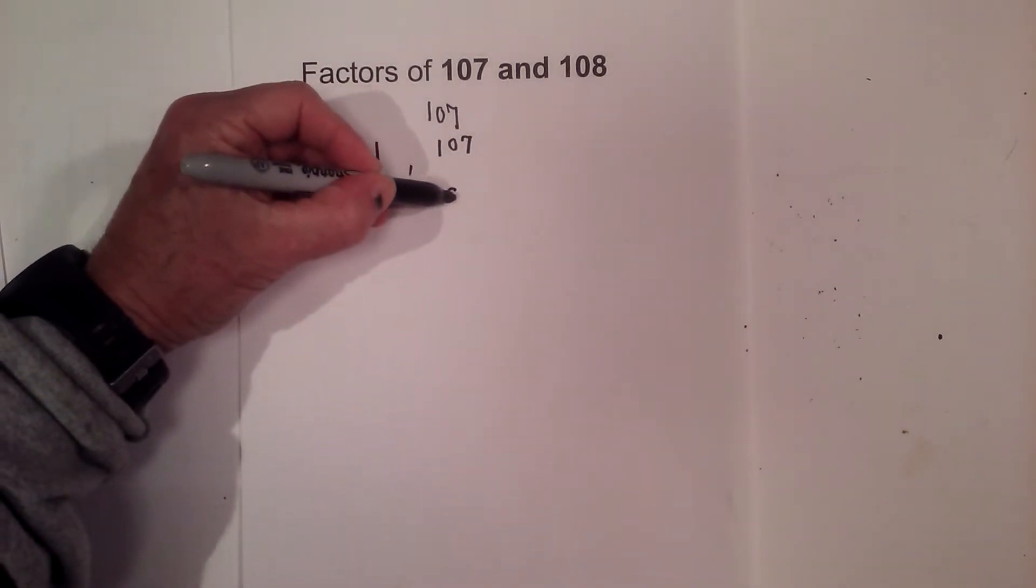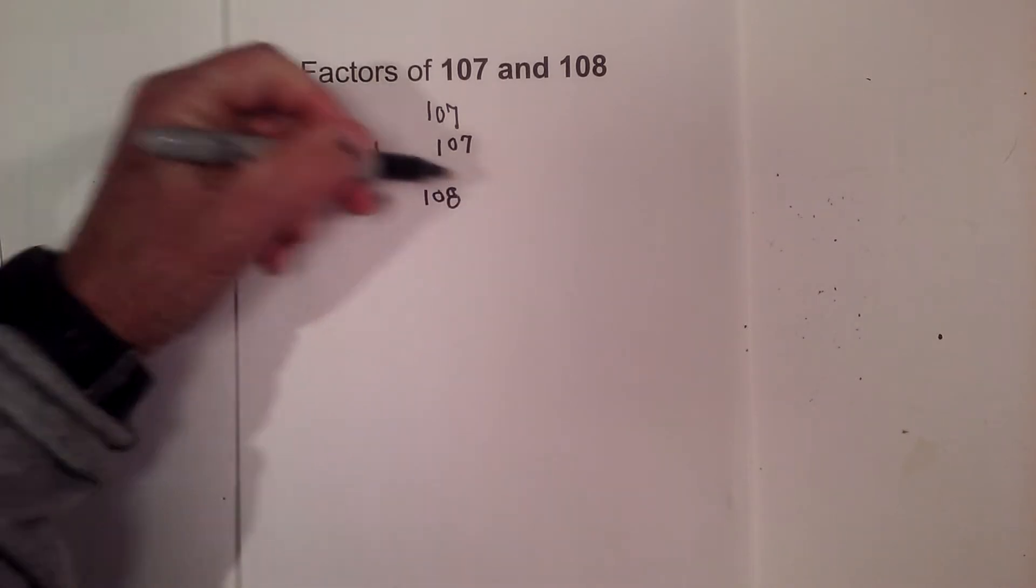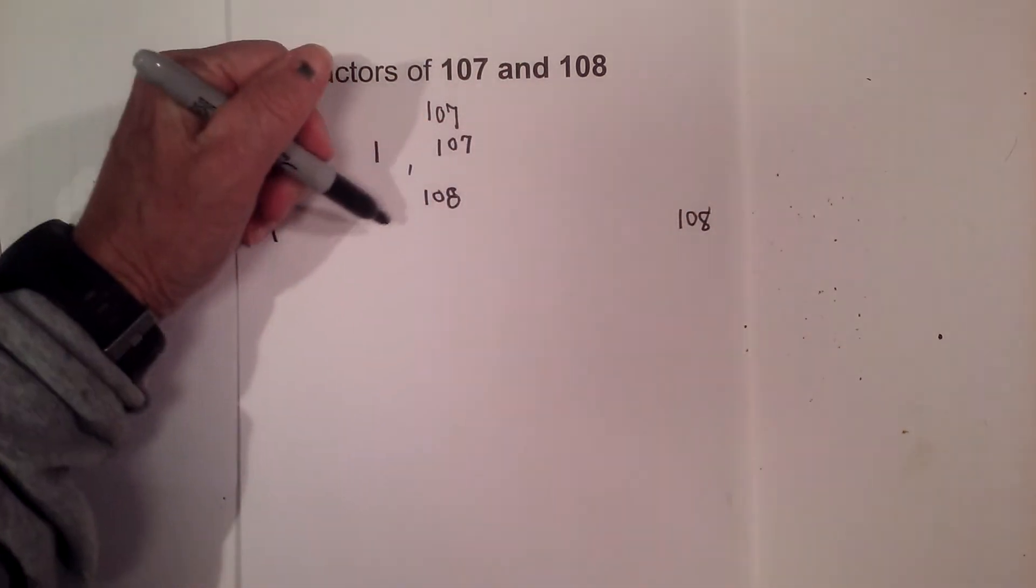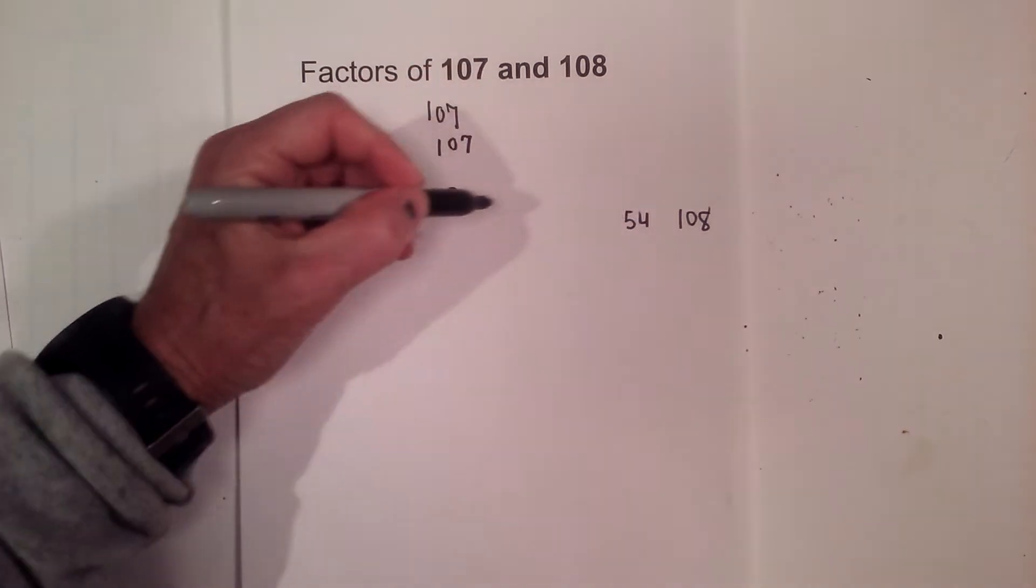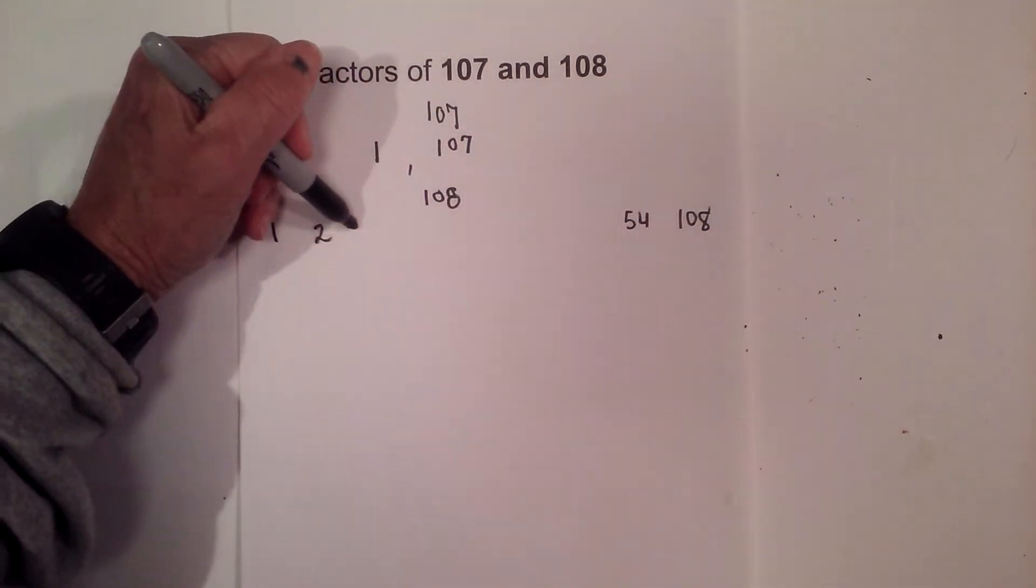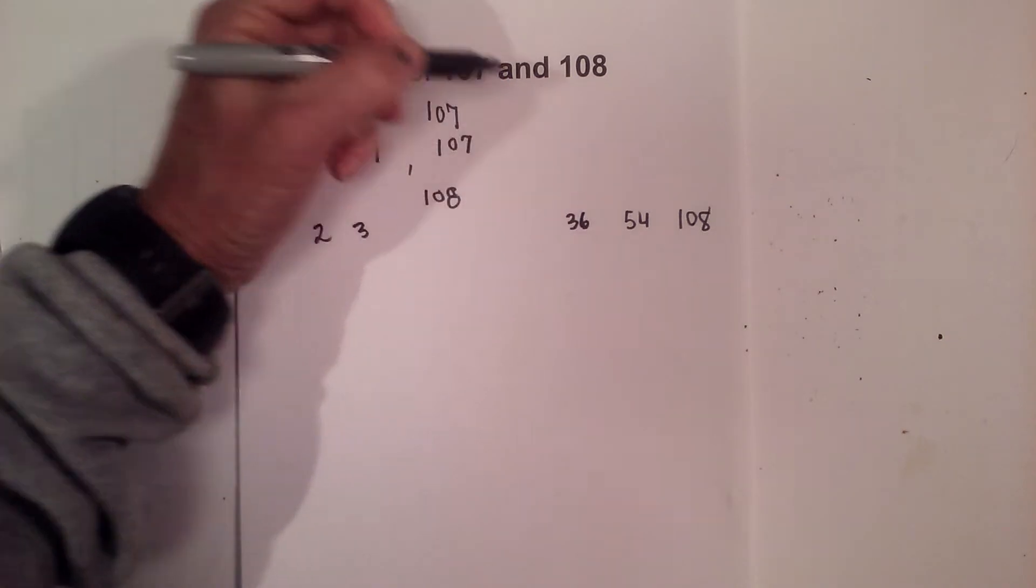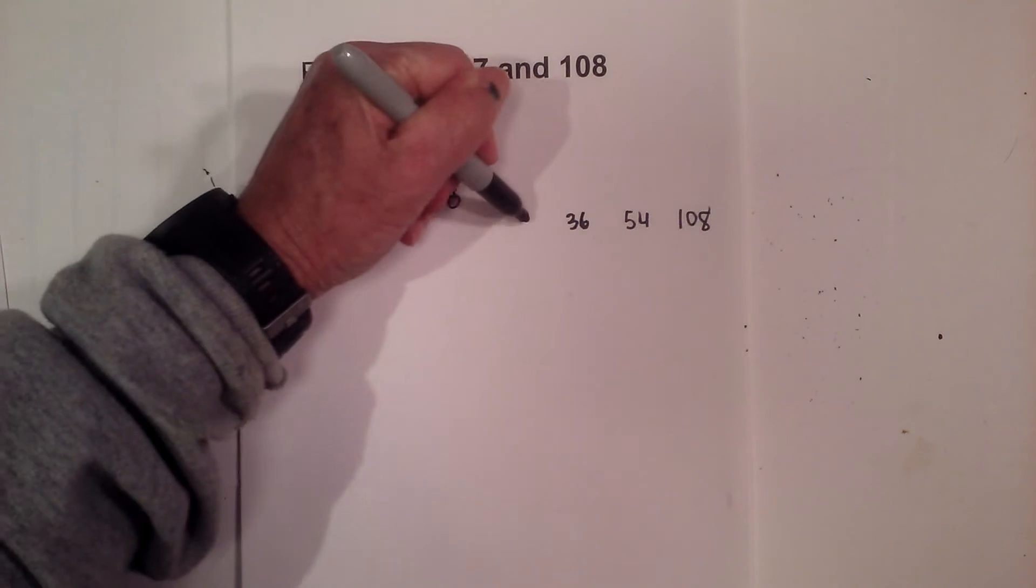Now, with 108, it is a composite number. So let's begin with 1 times 108, and then we can go 2×54. Then we can do 3 times 36 and 4 and 27.